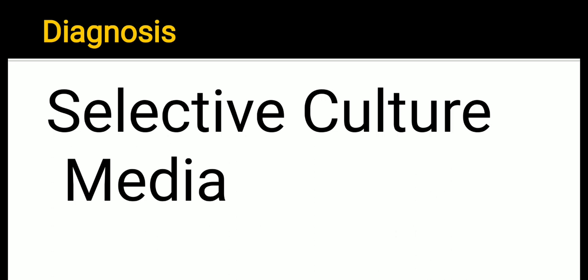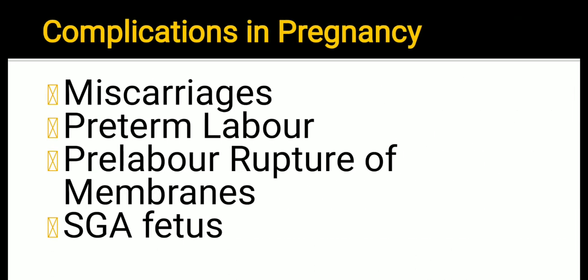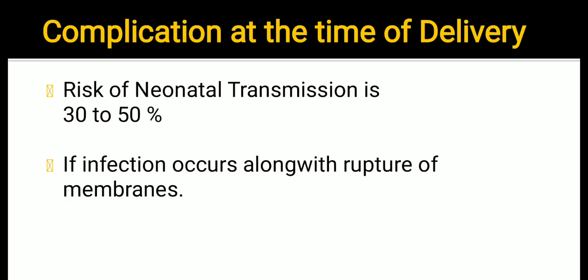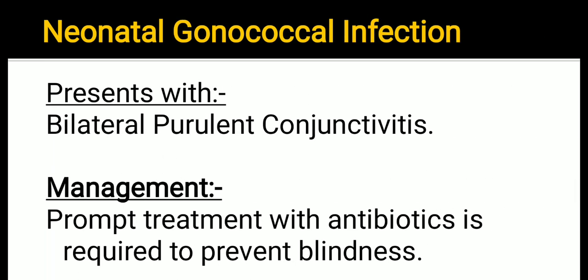Complications of gonorrhea in pregnancy include miscarriages, preterm labor, pre-labor rupture of membranes, and IUGR or SGA fetus. At the time of delivery, if infection occurs alongside rupture of membranes, there is a risk of neonatal transmission of 30 to 50 percent.